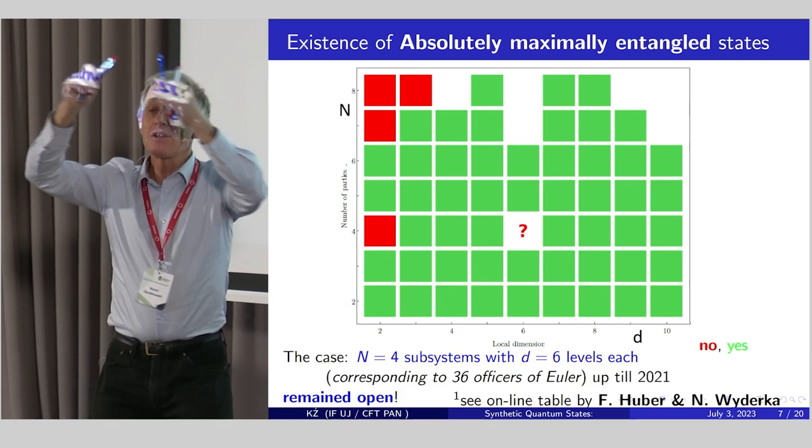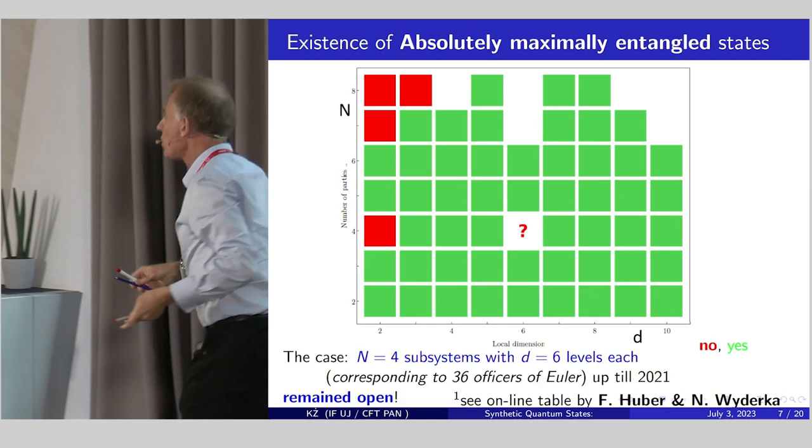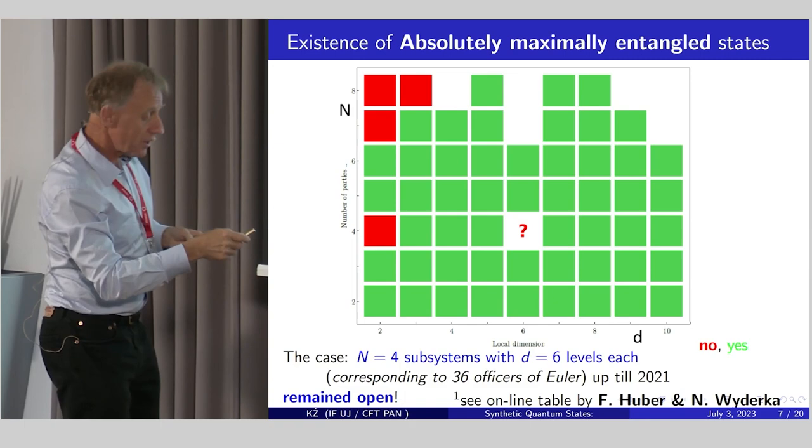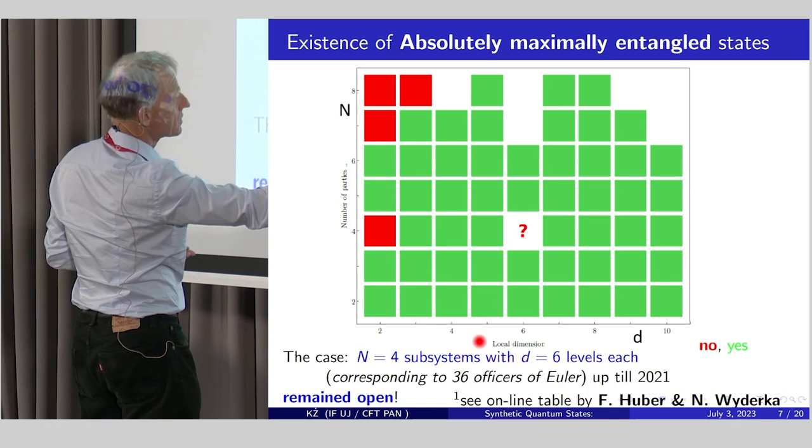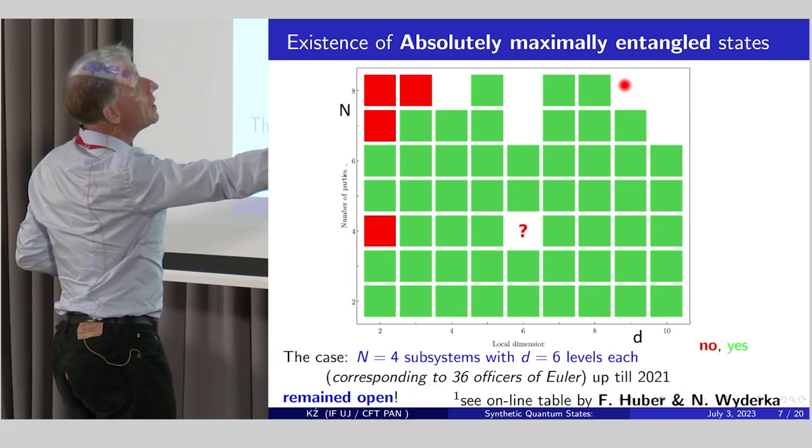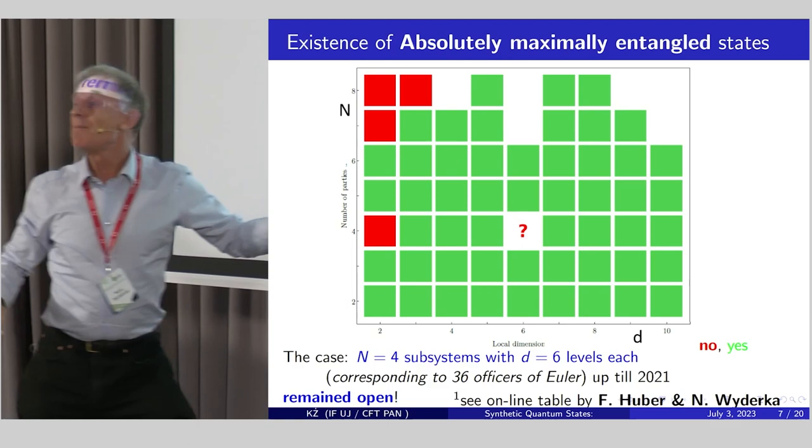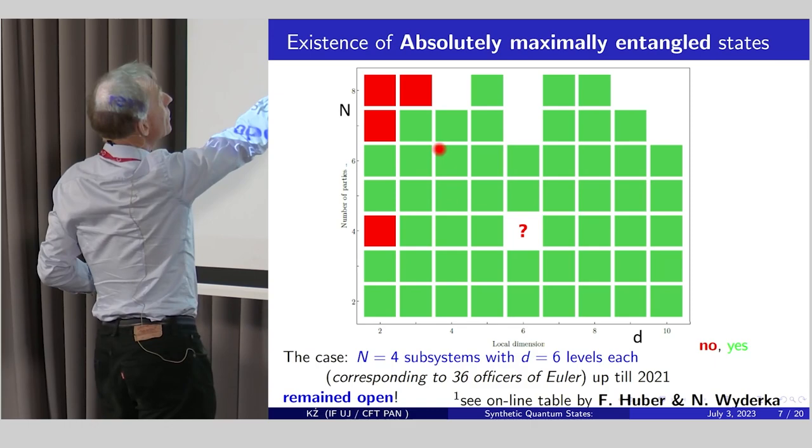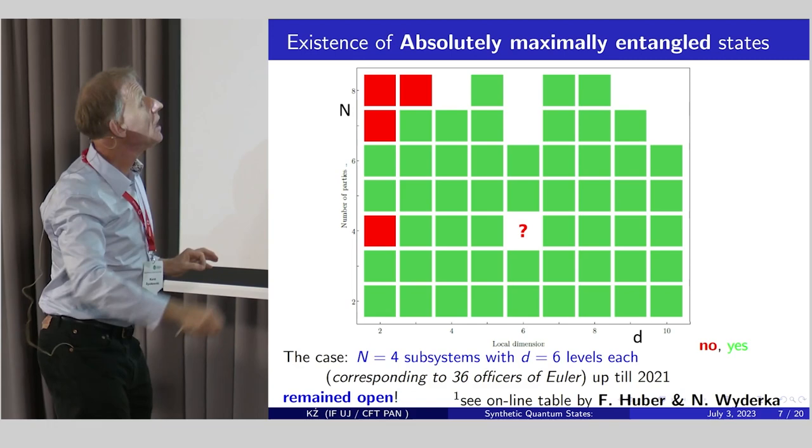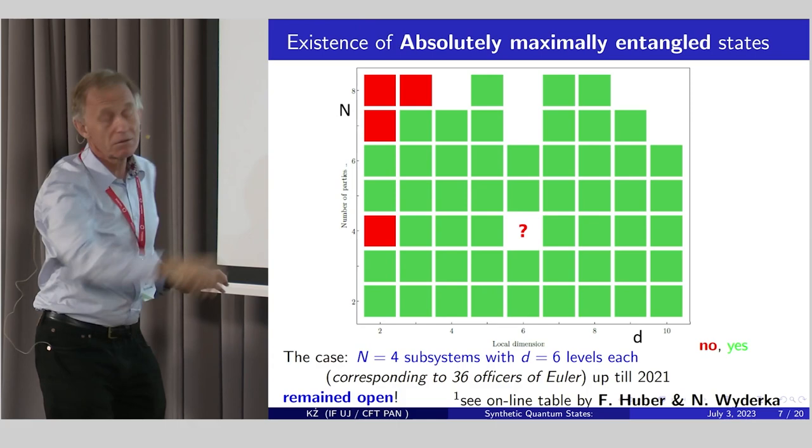Simplest possible case, if I take those four pens and consider qubits, such states do not exist. This is known by an important paper by Higuchi and Sudbury, also 22 years old. And then in 2021, there was an important question open, namely whether such states here for four parties with six levels each do exist. This was the status in 2021, but of course, there are many other questions open. In general, this table is not complete, so there is still a lot of work can be done concerning finding or disproving existence of such states. There was maybe interesting development here. There was a nice paper that for seven qubits such states, or eight qubits do not exist. In this direction, everything is red.